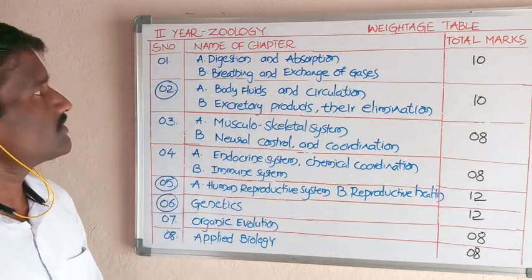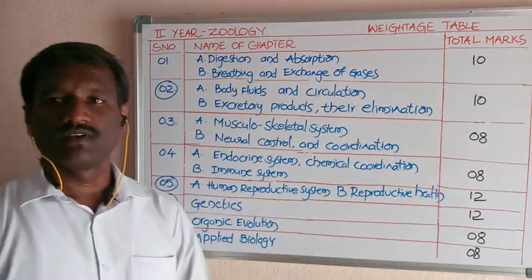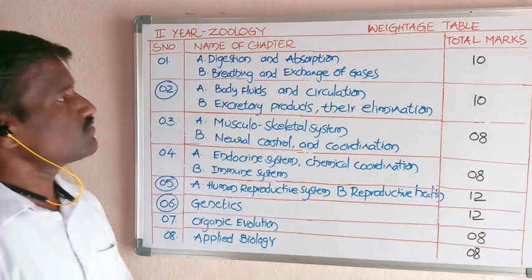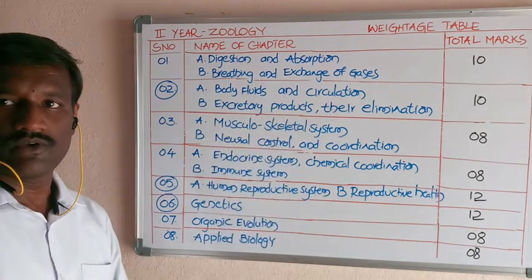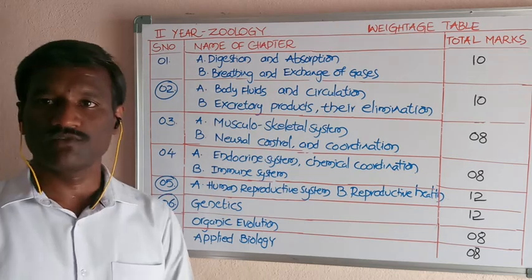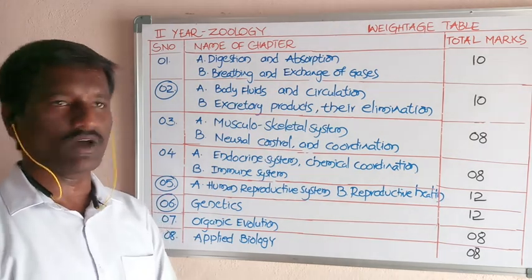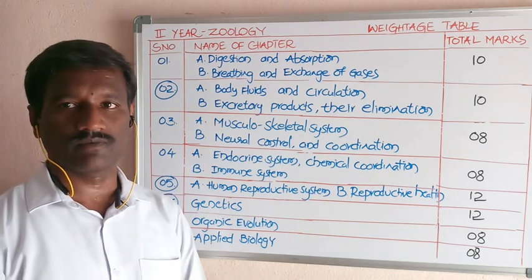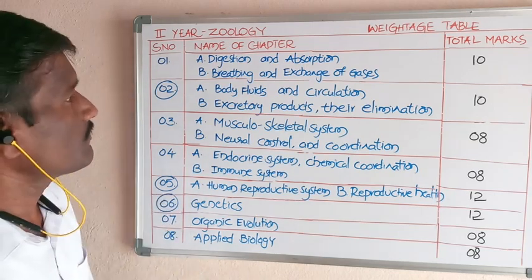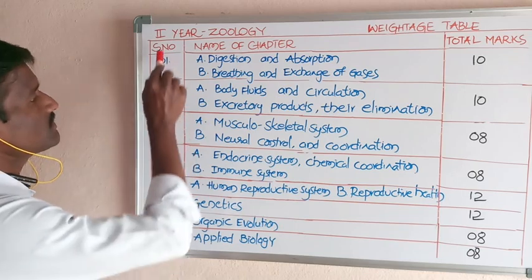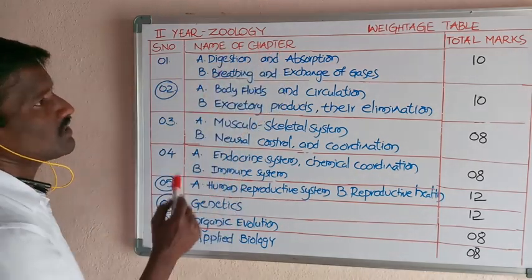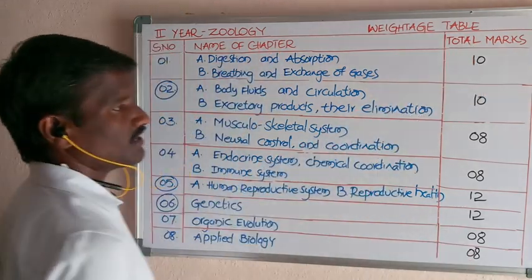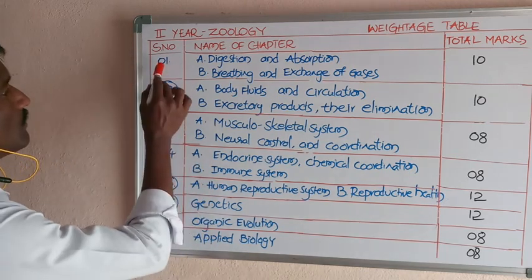Students, let us discuss the second year biology syllabus. This table shows the different types of chapters in the second year biology syllabus and the weightage of the marks. The columns are: serial number, name of chapter, and total weightage of marks.